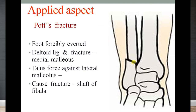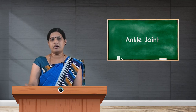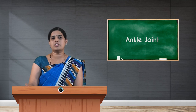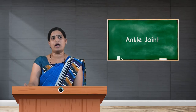The applied aspect is Pott's fracture. Pott's fracture refers to forceful sudden eversion of the foot, as seen in athletes. There is a fracture at the lower end of the shaft of the fibula and a fracture of the medial malleolus. Due to the sudden direction of force to the lateral side, there is sudden eversion of the foot, tearing of ligaments, injury to the medial malleolus, and fracture of the shaft of the fibula.